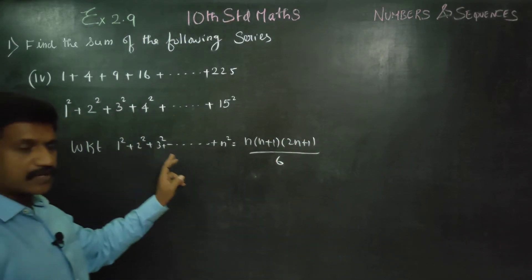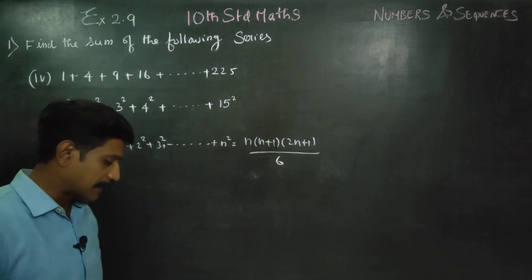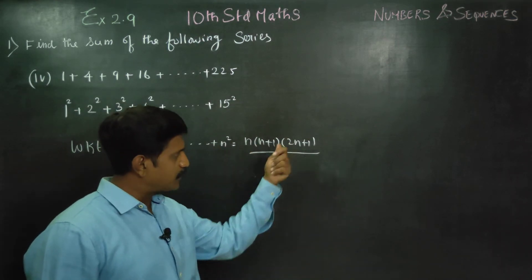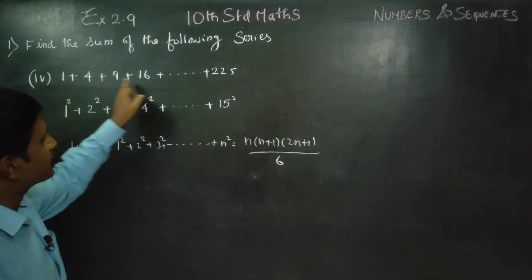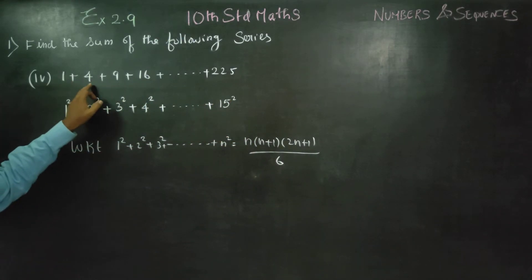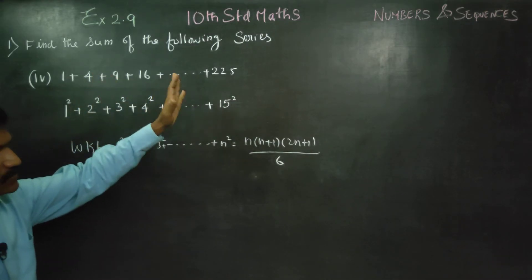1 squared, 2 squared, 3 squared dot dot dot n squared. n into n plus 1 into 2n plus 1 by 6 formula is used. This is all square, this is natural numbers. That's why it's natural numbers.